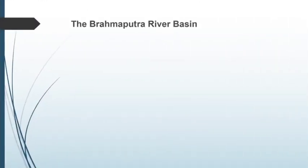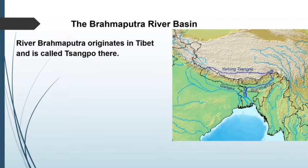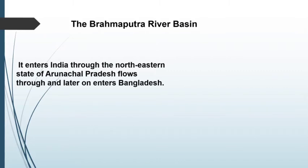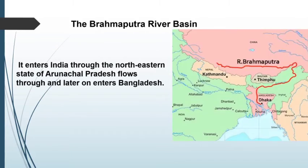Next is the Brahmaputra river basin. River Brahmaputra originates in Tibet and is called Tsangpo there. It enters India through the northeastern state of Arunachal Pradesh, flows through Assam, and later enters Bangladesh.